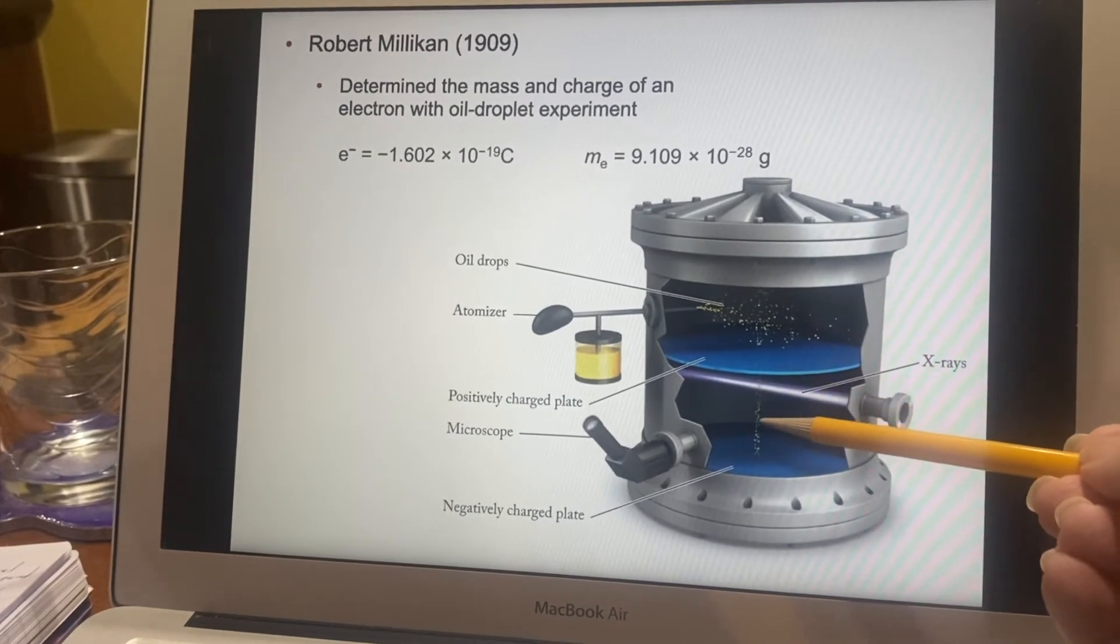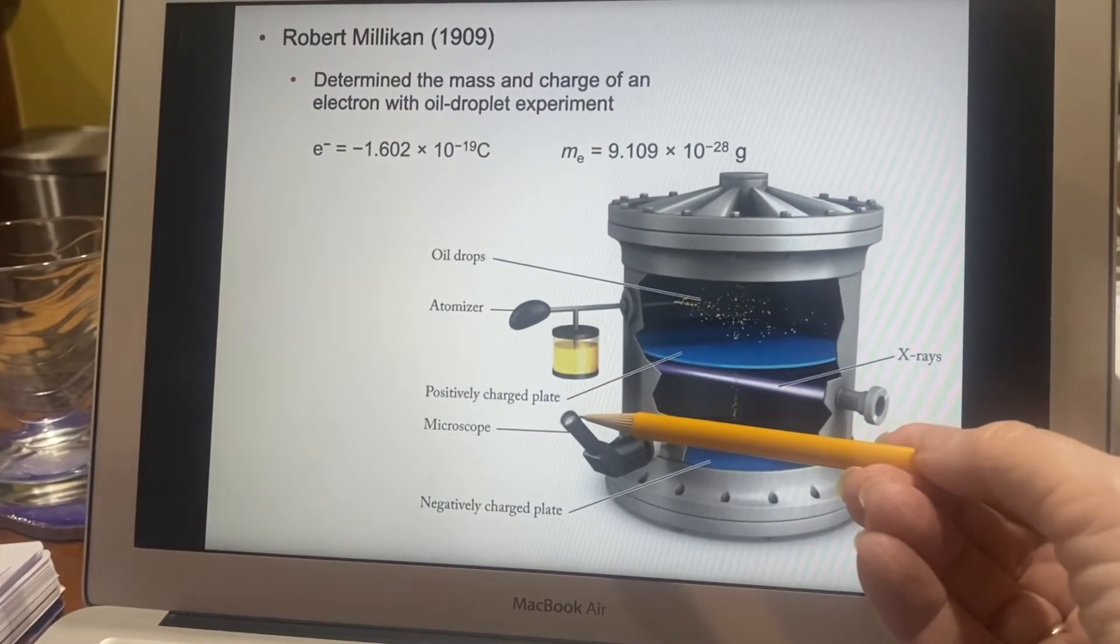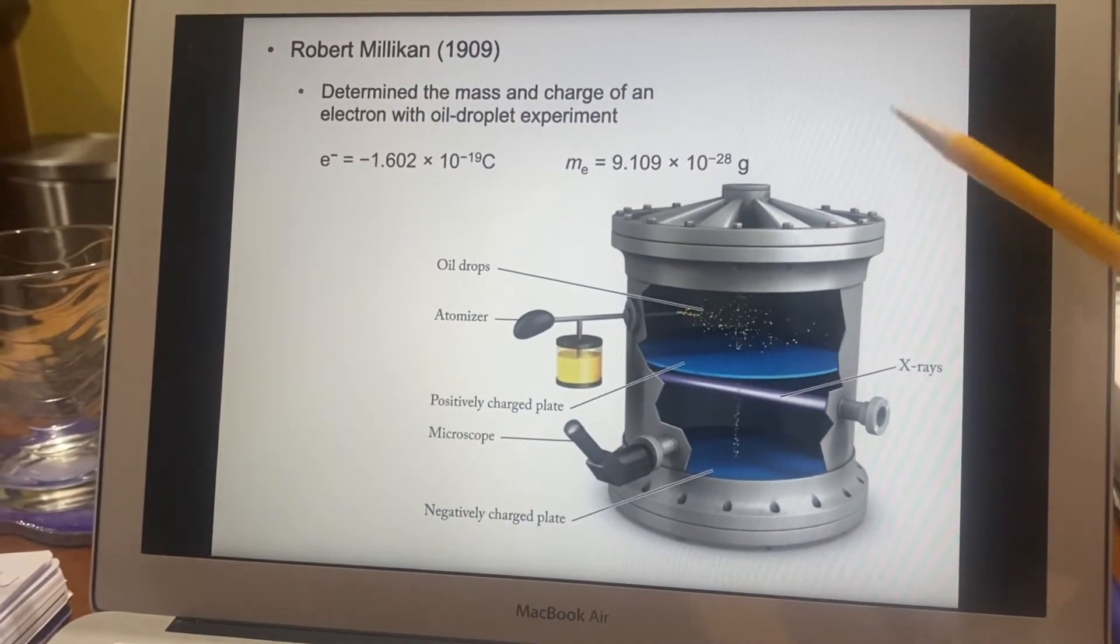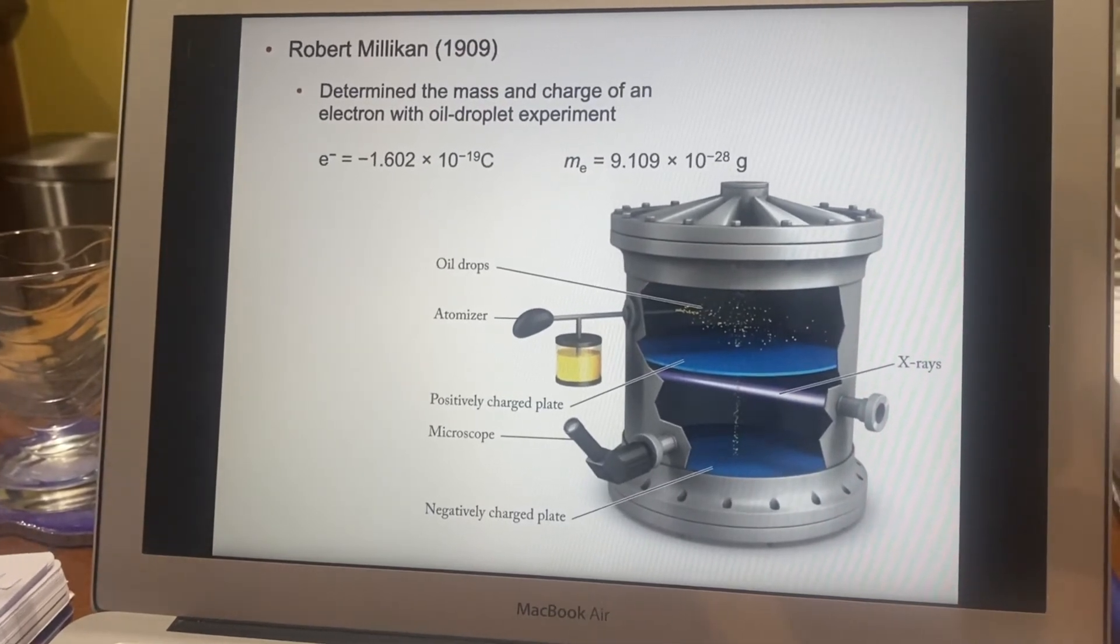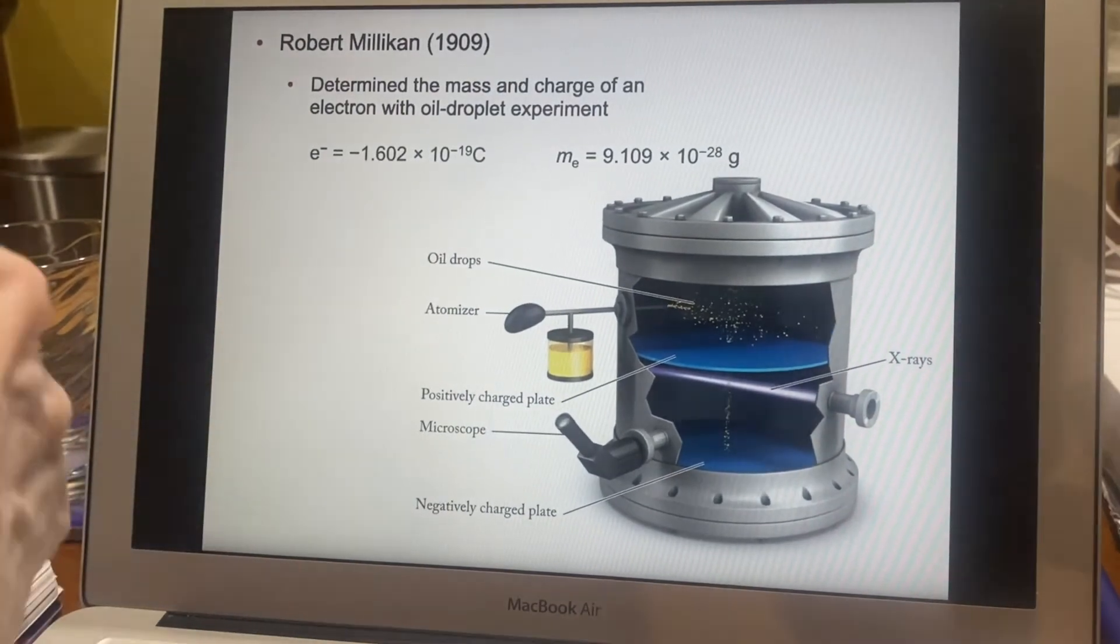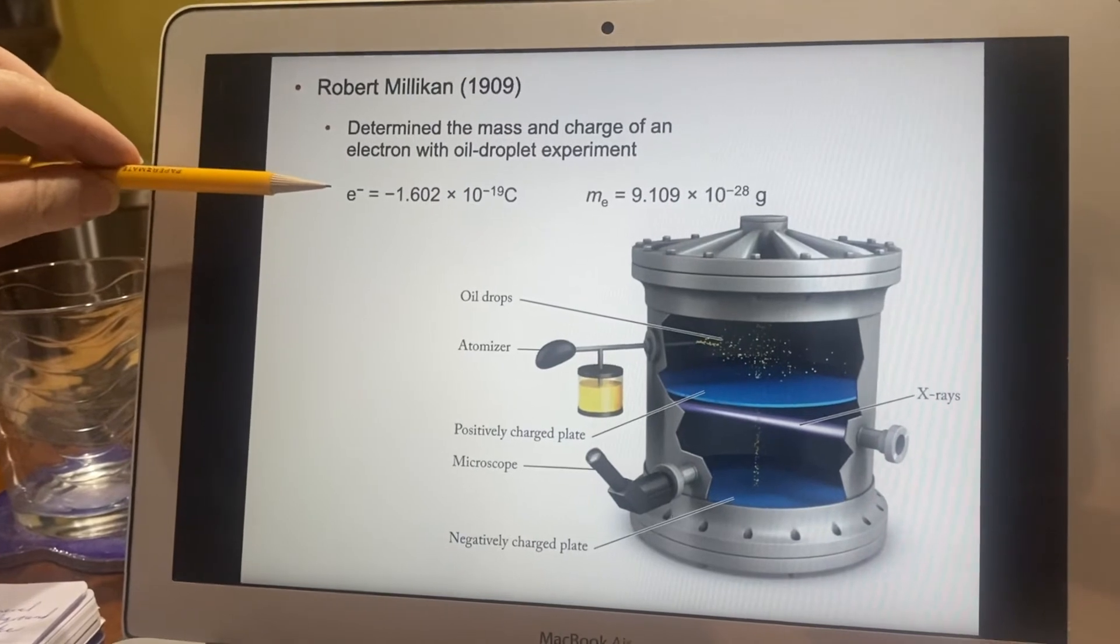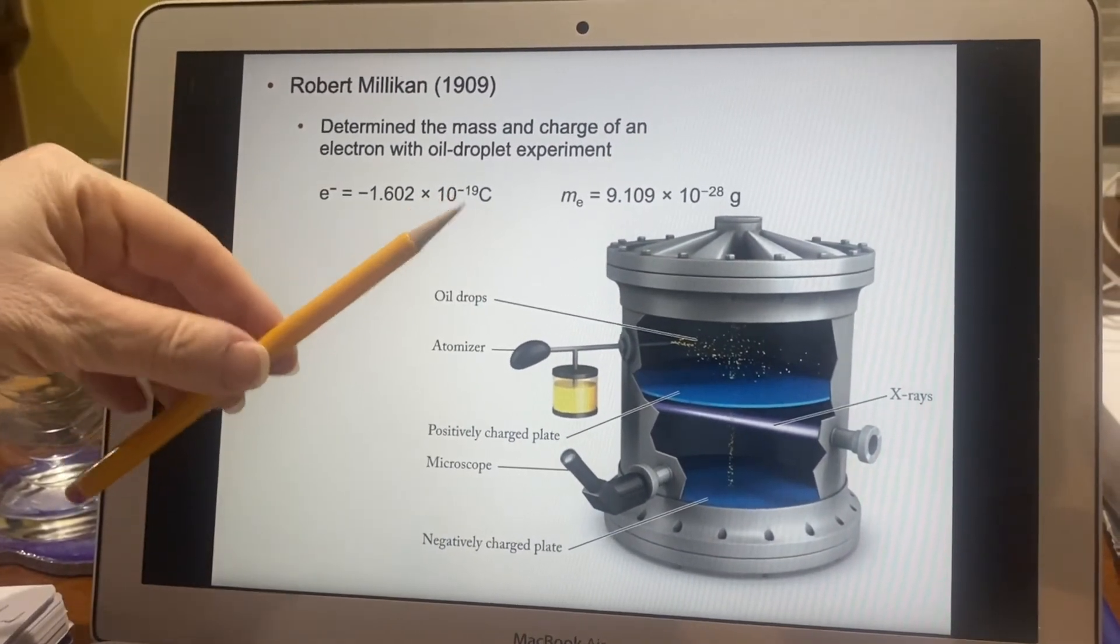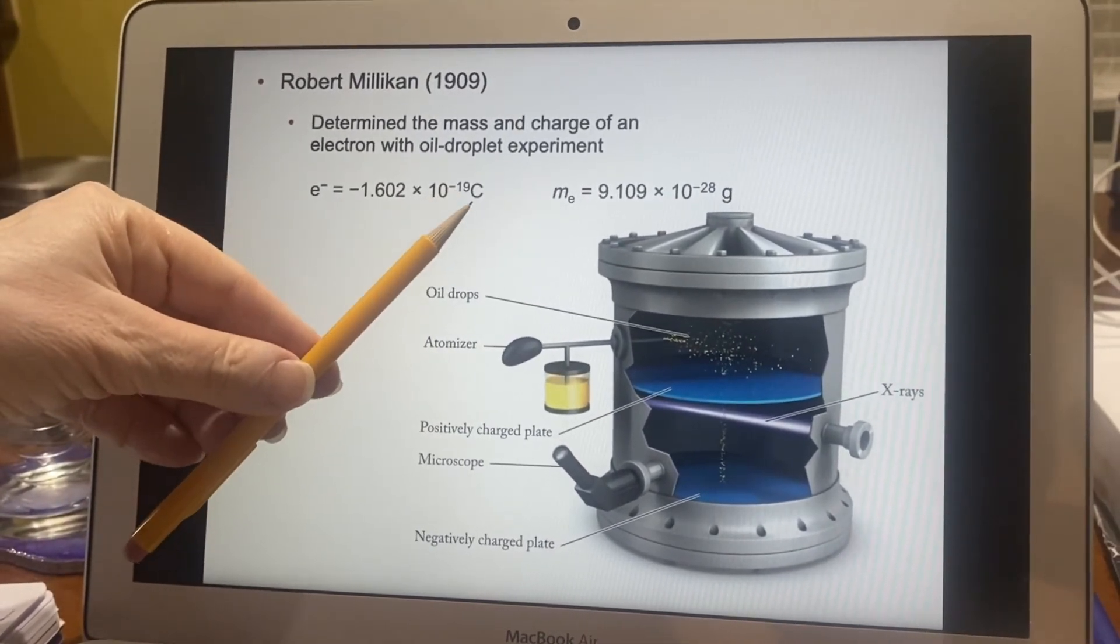And then you can examine how long it took them to fall by actually physically watching it and timing it. This is so far back there that all the work had to be done by direct observation. You couldn't automate any of it. I mean, you'd be squeezing the atomizer and then you would watch. When he got done, we ended up with the actual charge on an electron, which, as you can see, is a very tiny number. It is negative. It's -1.602 × 10^-19 Coulombs.